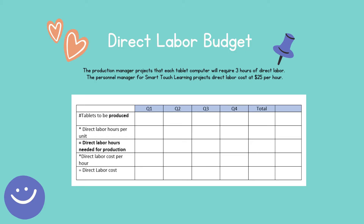Now let's prepare the direct labor budget. Since it depends on the production budget, I need the number of tablets to be produced. Taking it from the production budget: 410 in quarter 1, 560 in quarter 2, 610 in quarter 3, 660 in quarter 4, and the total is 2,240.